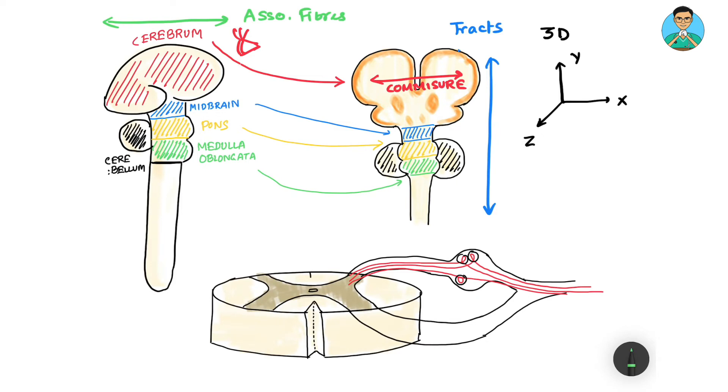So superior-inferior we have tracts, left to right we have commissures, and anterior-posterior we have association fibers.